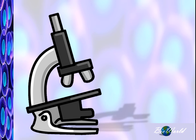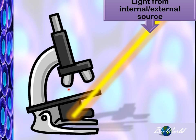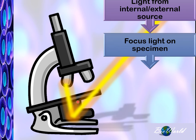Now let me explain briefly how the light microscope functions. First, light — either internally from the light bulb or externally from sunlight — will pass through the condenser and focus on the specimen that is placed on the stage.